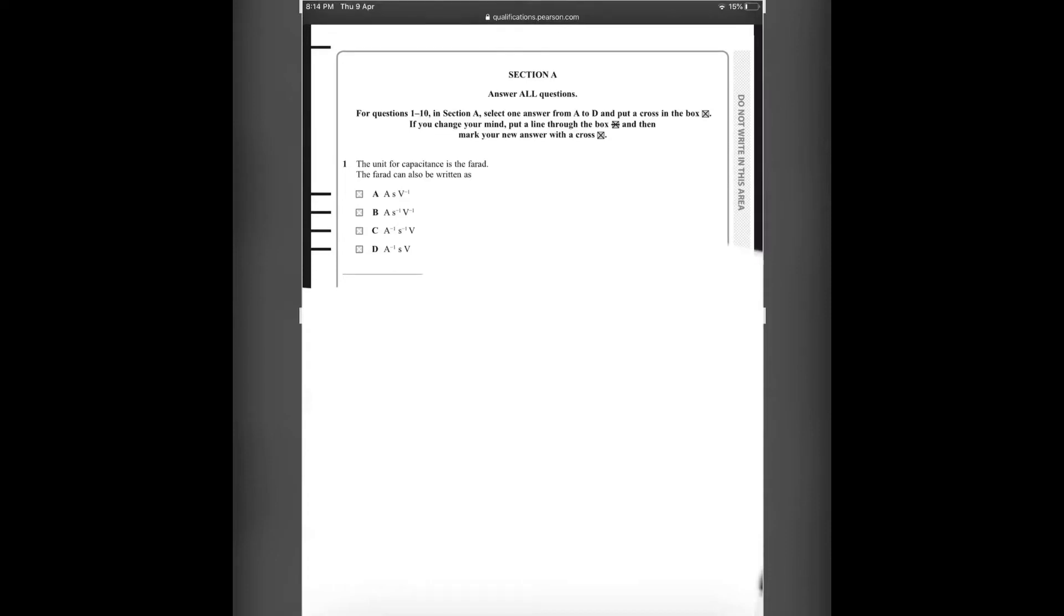Number 1. The unit for capacitance is the farad. The farad can also be written as... We have the formula Q equals CV, where Q is the charge, C is the capacitance, and V is the voltage or potential difference. We can rearrange it to write C equals Q by V. From Q by V, we know that Q equals IT, so here will be IT by V. This I will be ampere, time will be seconds, voltage will be volts. Ampere seconds per volt. This answer is matching with A.